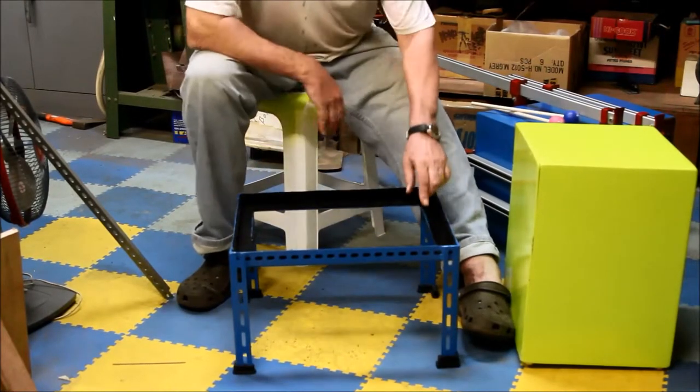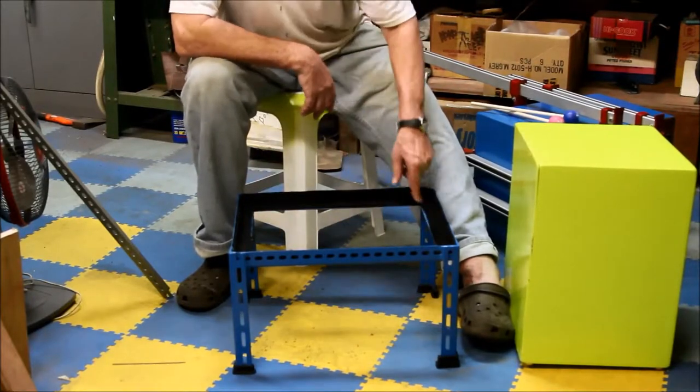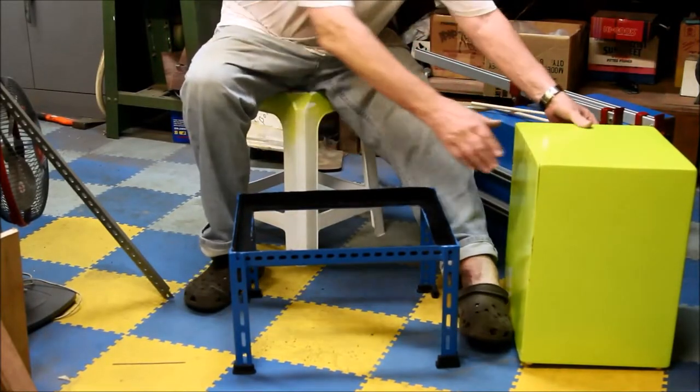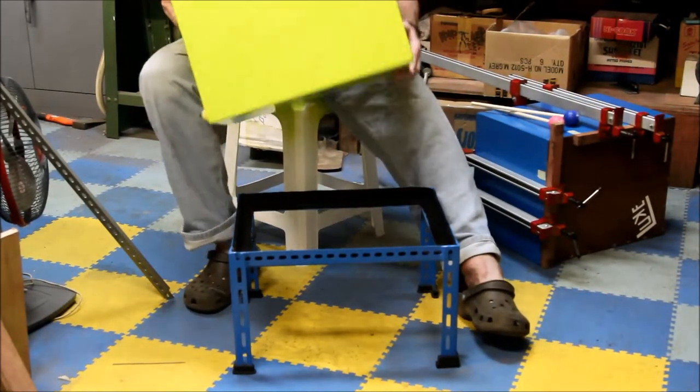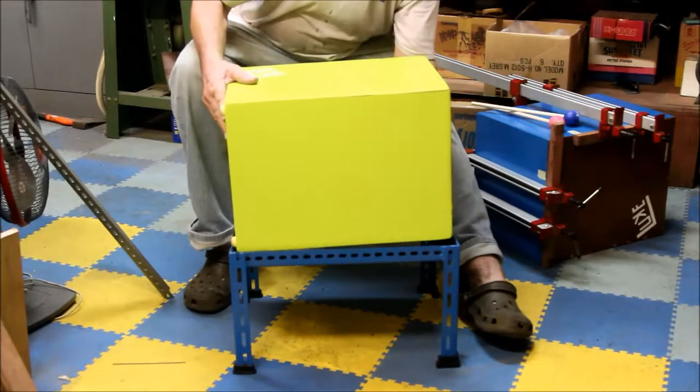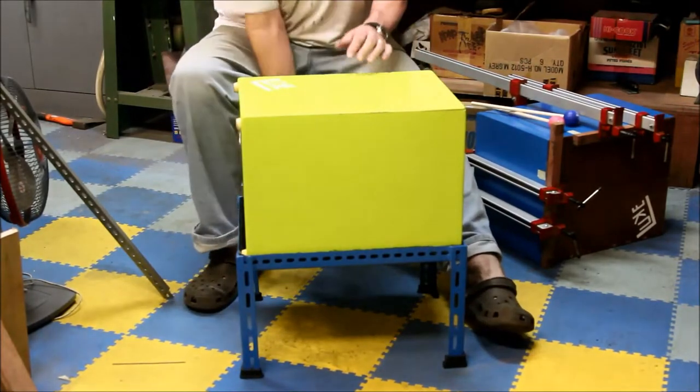We didn't want it to scratch the cajon up so we just put some felt on the inside, just glued it in there with rubber cement. We made it big enough that it would fit the cajons that we've been making. All of our cajons are a standard size so it just fits in there on top like that. The hole was on the bottom.